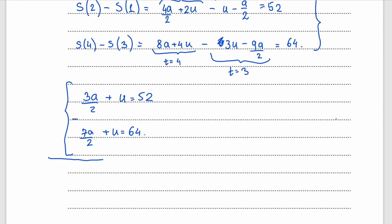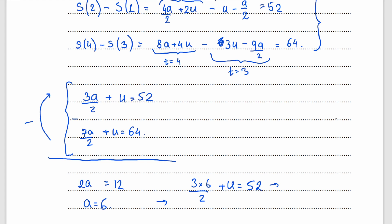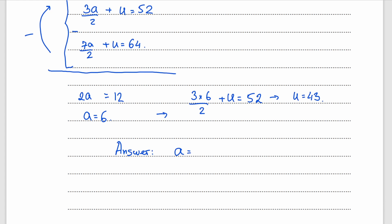Subtracting the first equation from the second: 2a equals 12, which gives a equals 6. Substituting into the first equation: 3 times 6 over 2 plus u equals 52, so u equals 43. The answer is a equals 6 and u equals 43.